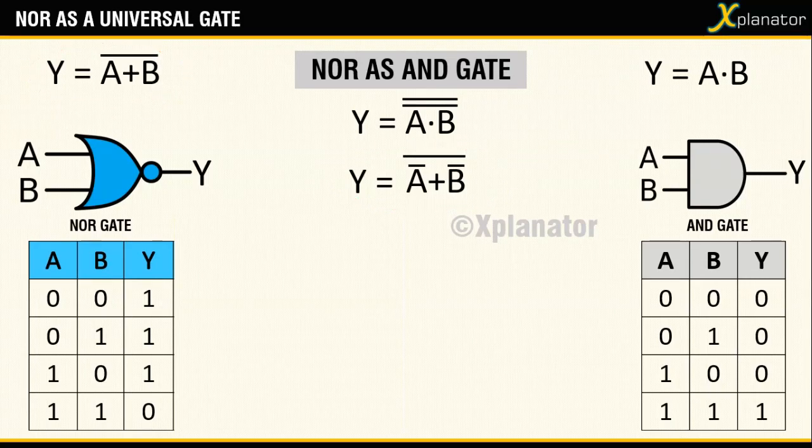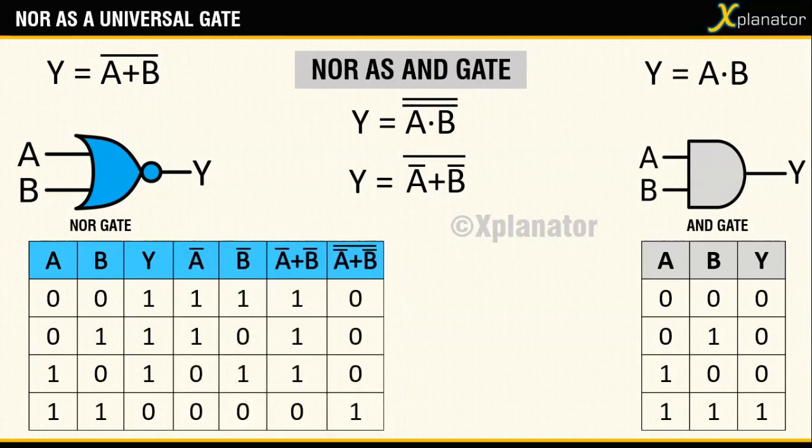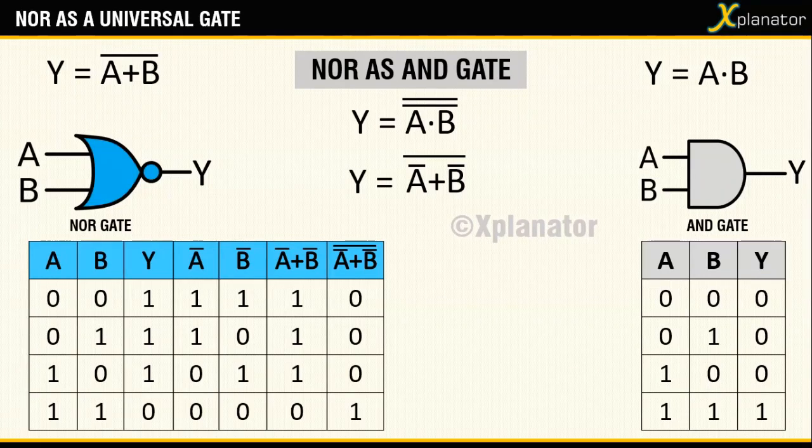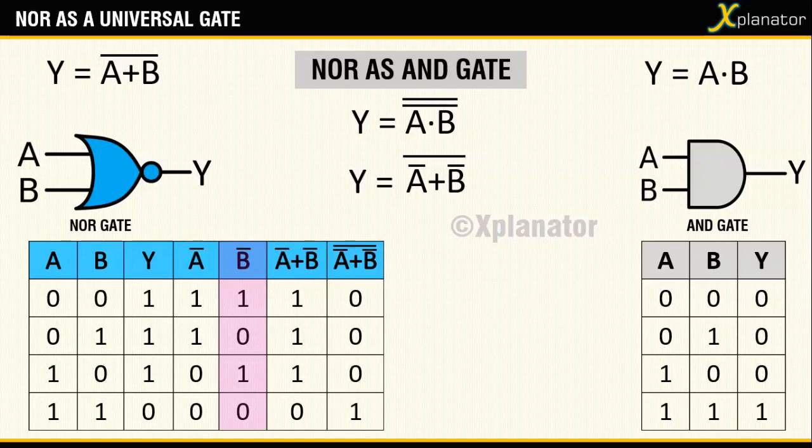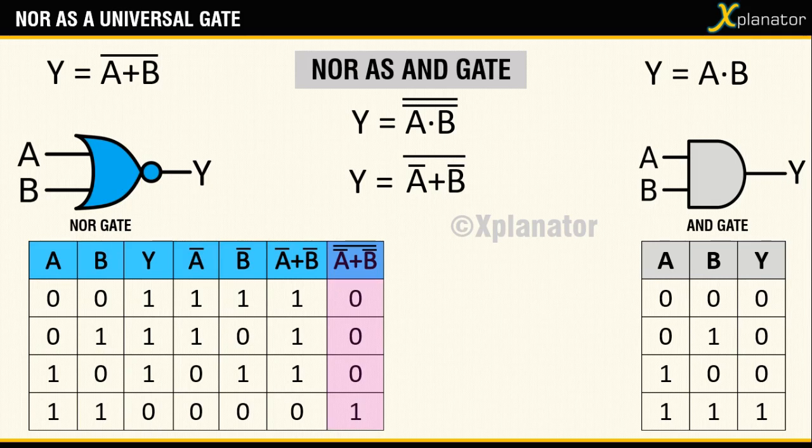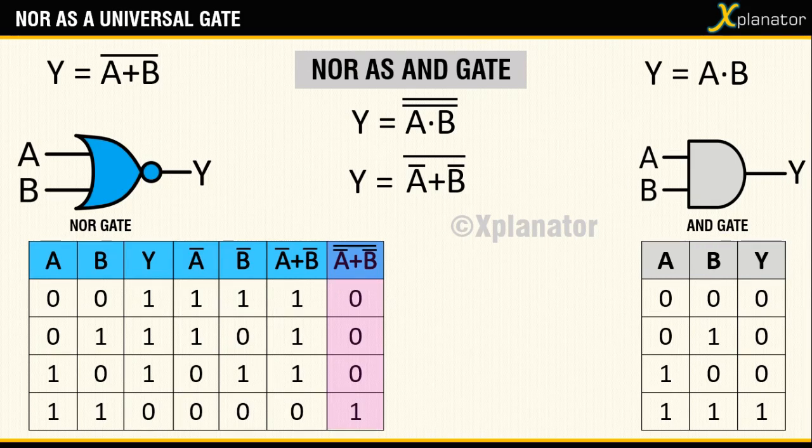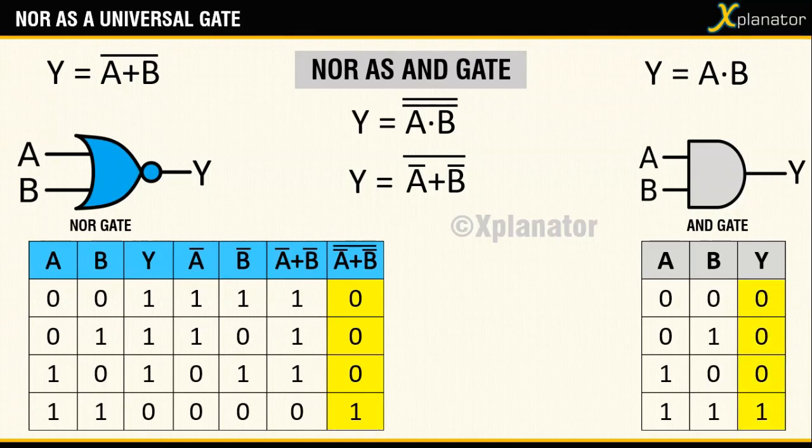Check the derived equation against the truth table. There is A bar B bar followed by A bar plus B bar and the last term is A bar plus B bar. That last column matches with the truth table of the AND. So you can say that the derivation is correct.